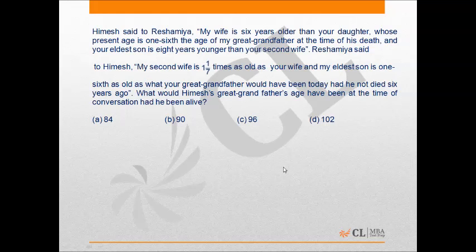This will be a Round 2 question. It's given that Himesh said to Rashmiya: my wife is 6 years older than your daughter. So you can represent this as: wife of Himesh is equal to daughter of Rashmiya plus 6.